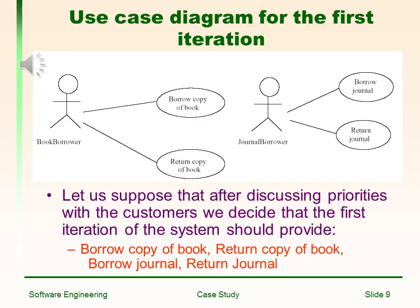Use case diagram for the first iteration. Let us suppose that after discussing the priorities with the customer, we decided that the first iteration of the system should provide: borrow copy of book, return copy of book, borrow journal, and return journal.